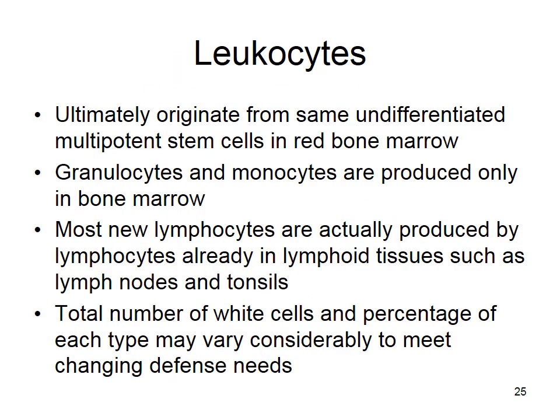Leukocytes ultimately come from the bone marrow, but some replicate outside the bone marrow because they have nuclei. All granulocytes — eosinophils, basophils, and neutrophils — and monocytes are only made in the bone marrow. Most new lymphocytes (T cells and B cells) are produced by lymphocytes already hanging out in lymphoid tissues like lymph nodes and tonsils. The number and relative makeup of white blood cells depends on whether you're fighting an infection — white blood cell numbers increase when fighting infection.